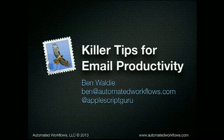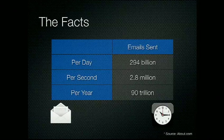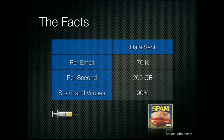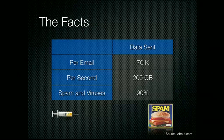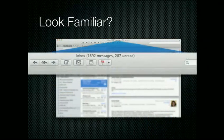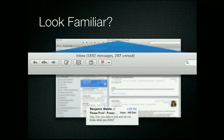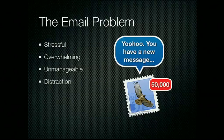I'm Ben Waldy and I'm going to talk to you about email productivity. According to about.com, 294 billion emails were sent per day in 2010 — about 2.8 million emails per second, or 90 trillion emails per year, and that was three years ago. Average email size is about 70K, so about 200 gigabytes of emails sent every second. And 90% of all email is spam and viruses. Does your email inbox look like this? You know it, I know it, everybody knows it — email's a huge problem. It's overwhelming, stressful, and often unmanageable, and it distracts us from other important things.